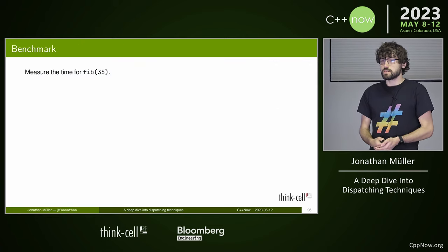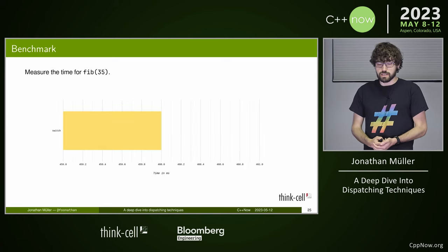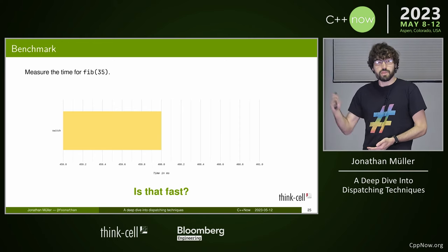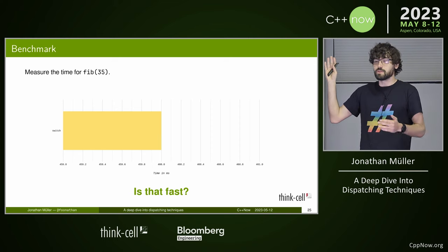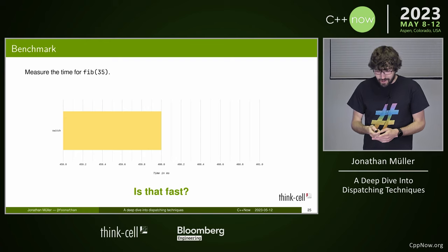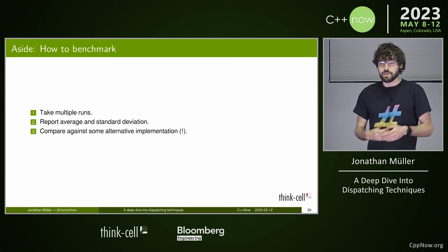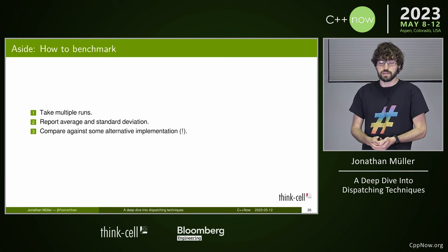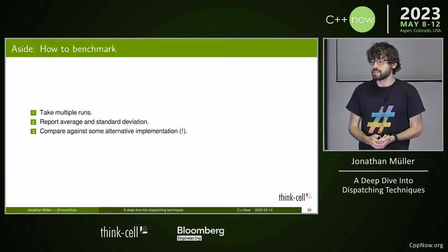Let's measure the time to execute Fibonacci(35). The result is 460 milliseconds. Is that fast? We need multiple runs because of inherent noise, then report the average and standard deviation to qualify the noise level. And then we need to compare against something else — performance numbers in isolation are meaningless.